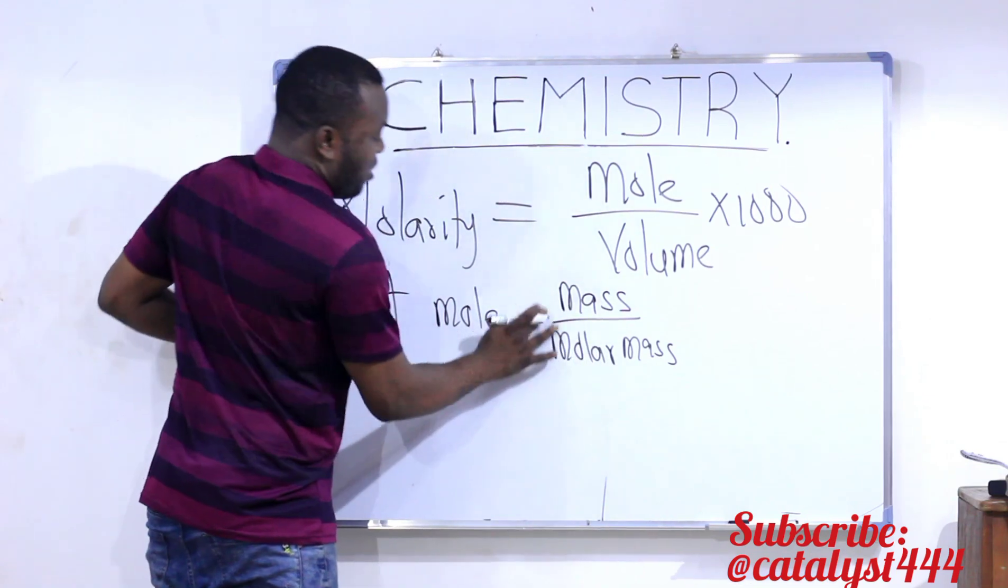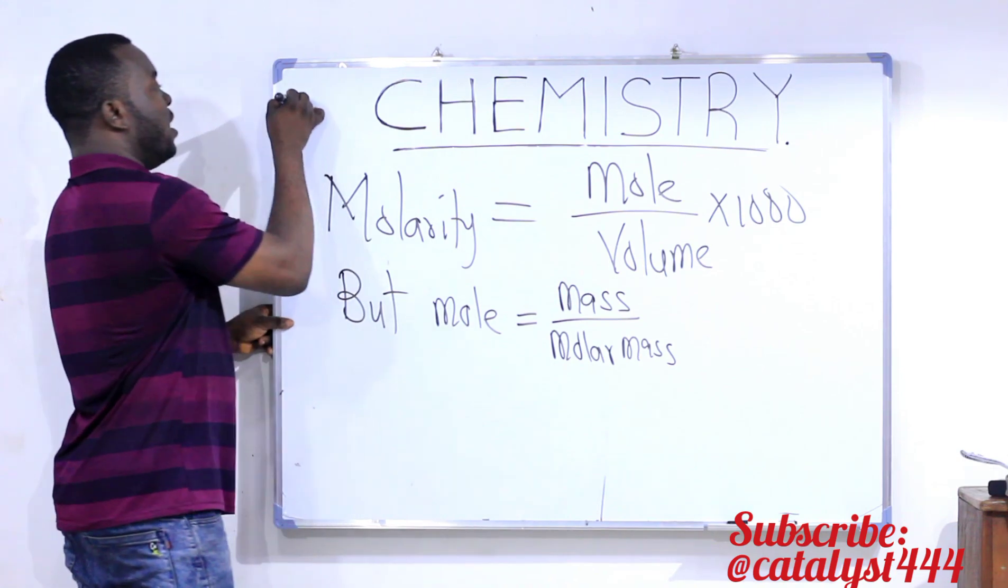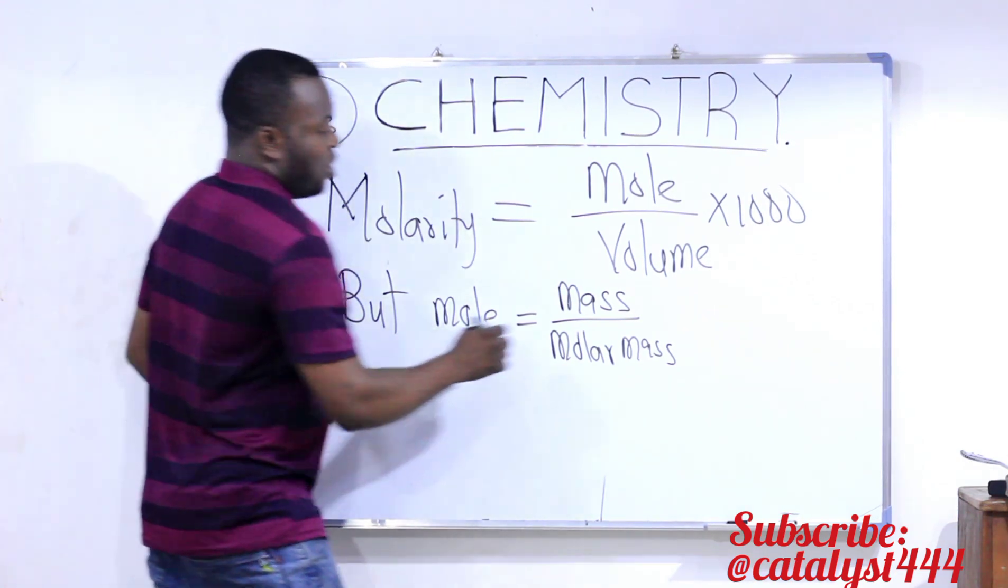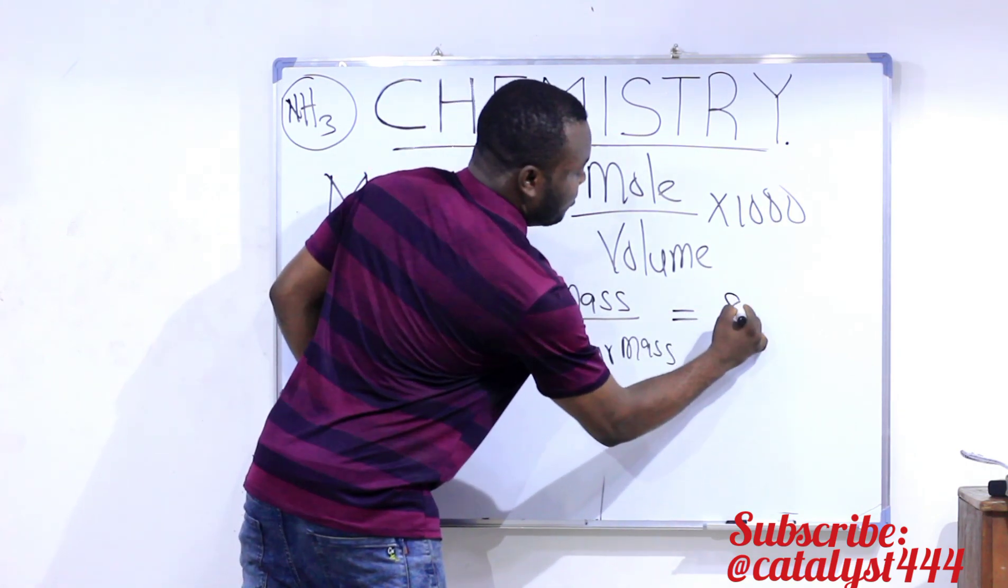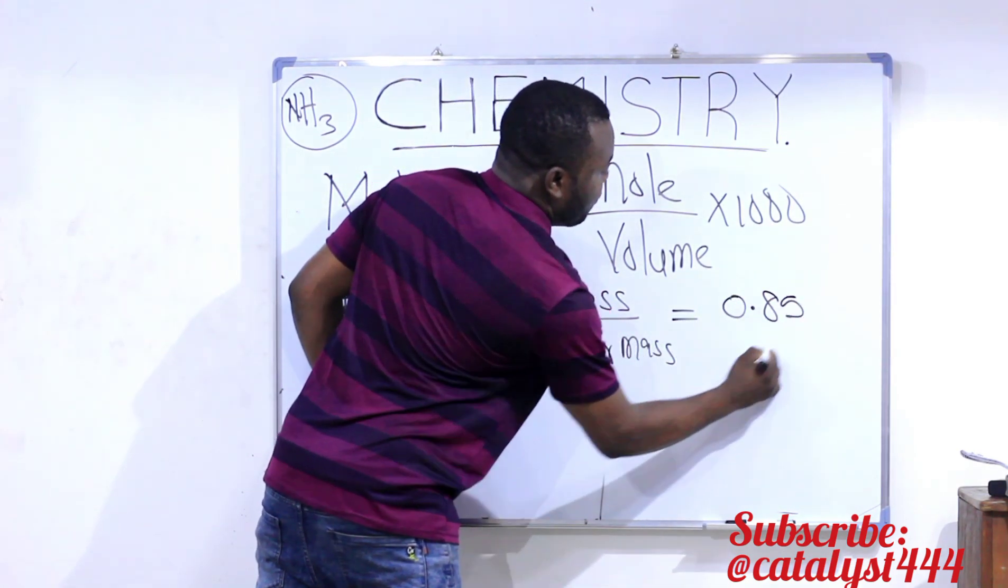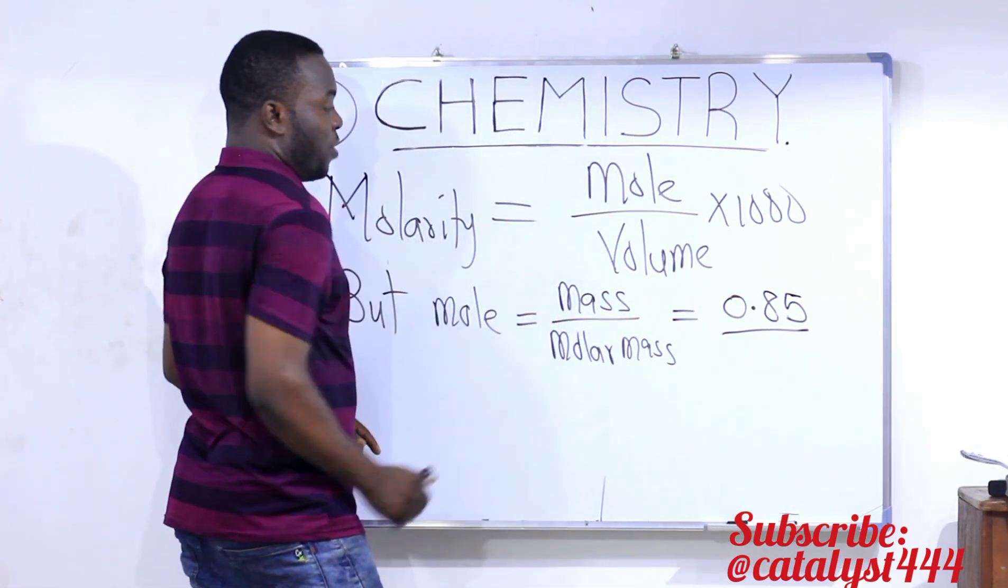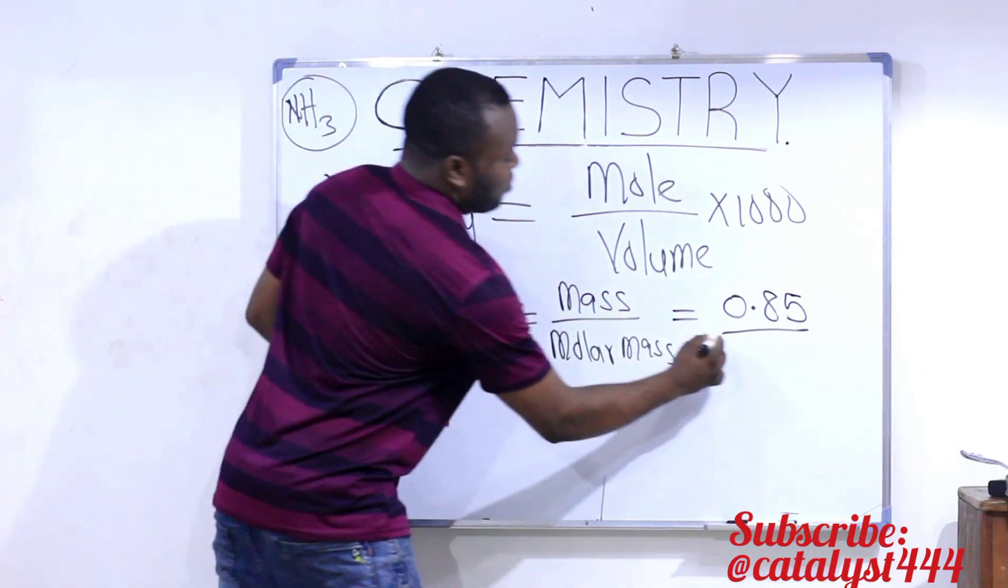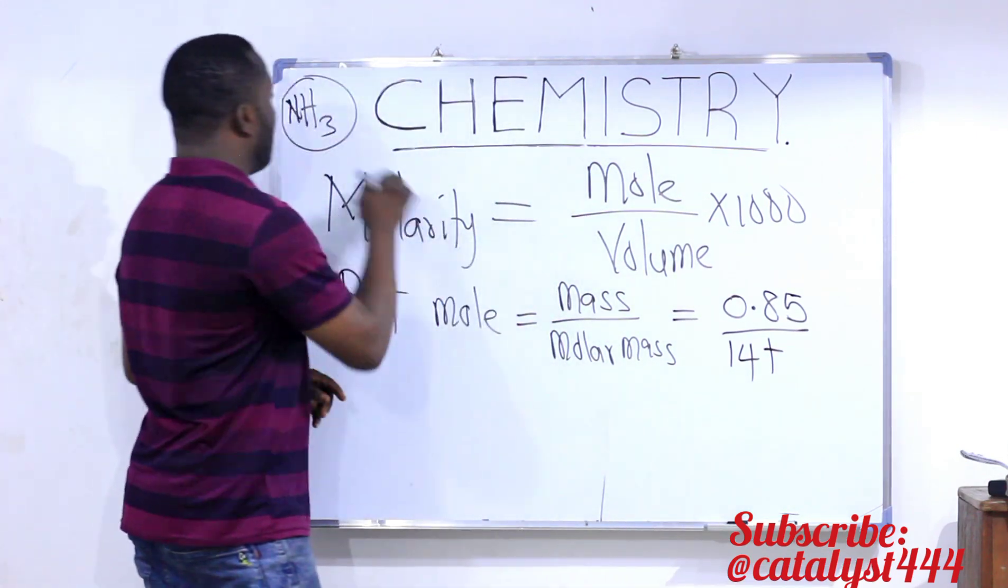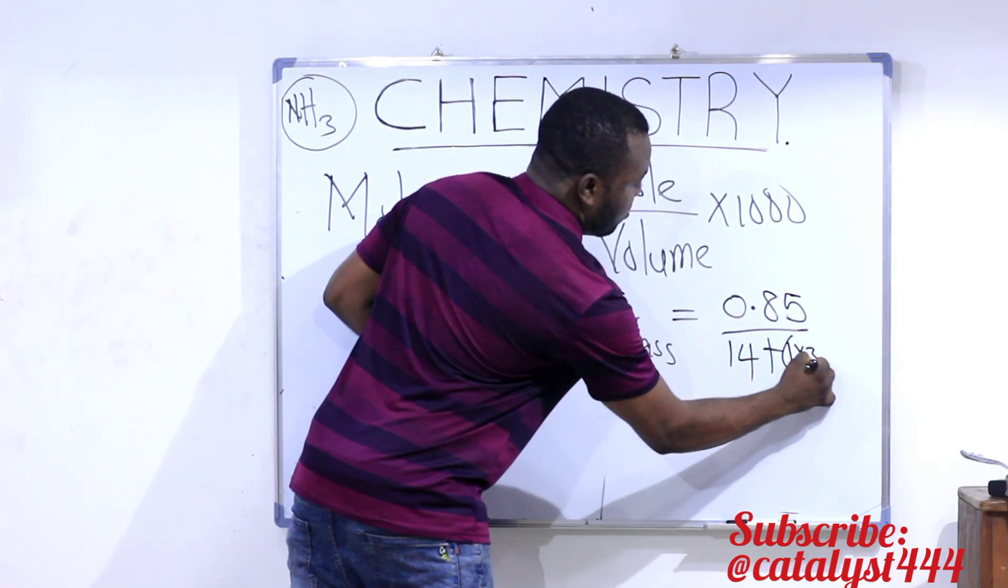And remember, the compound we are talking about in this question is ammonia. Which we know to be NH3. That's ammonia. So the mass is 0.85. And the molar mass of ammonia, as we know, nitrogen is approximately 14. Plus, hydrogen is approximately 1. And it's multiplied by 3.